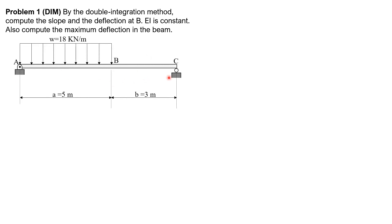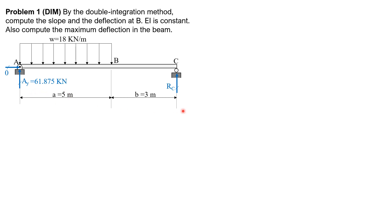Here is the given beam. First, let's compute for the vertical reaction at A. The horizontal reaction is zero since there is no inclined load. At C, we have R sub C. Summation of moments about C equals zero: AY times 8 minus 18 times 5 times 5.5 equals zero. So AY equals 61.875 kilonewtons.